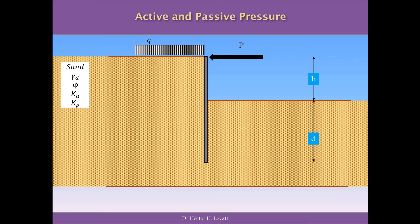Again, we are going to study a simple case where we have a sand with a certain unit dry weight and angle of internal friction. We are going to have defined, because of this angle of internal friction, the coefficient of active pressure and passive pressure.